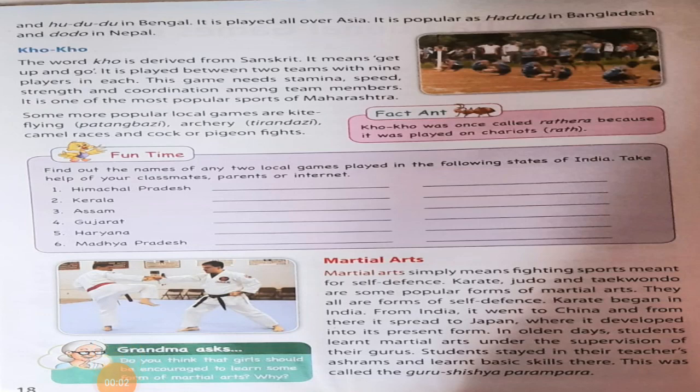Good morning, class 5th. Today we are going to read about the 3rd part of chapter 4, that is traditional games of India. In the previous class, we have seen about Bo Trace and Kabaddi. Now, in this class, we have to start from Kho Kho. So class, open page number 18 in your EBS book and keep a pencil with you.